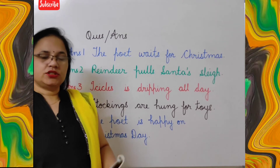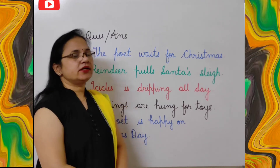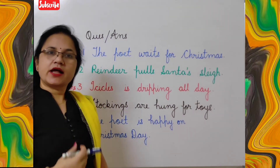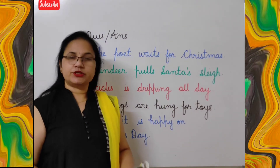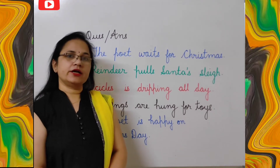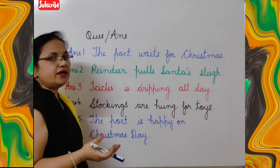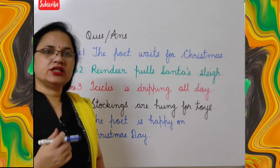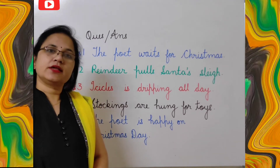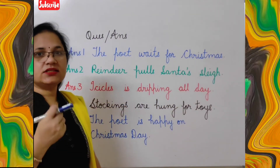Next is question and answer. Question 1: What does the poet wait for? Answer: The poet waits for Christmas. Question 2: Which animal pulls Santa's sledge? Answer: Reindeer pulls Santa's sledge. Question 3: What is dripping all day? Answer: Icicles are dripping all day.